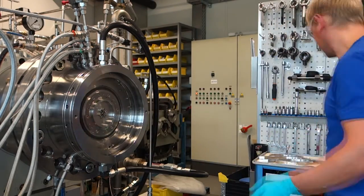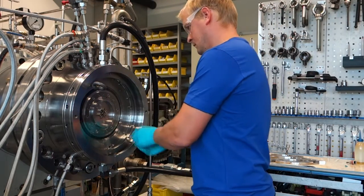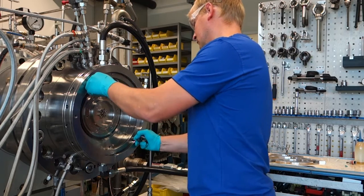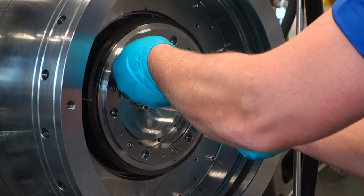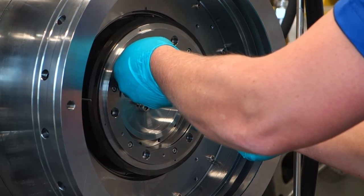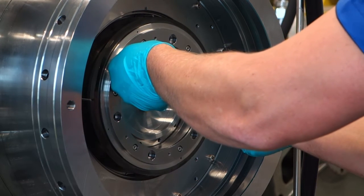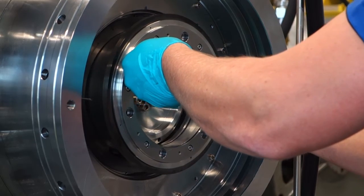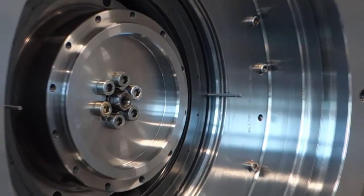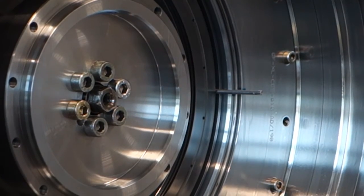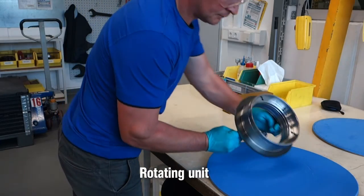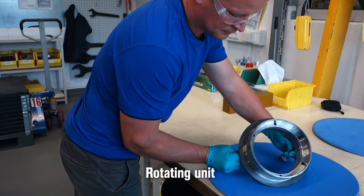The COBA seal is then removed, dismantled, and inspected in order to assess the condition of the seal after the test. The rotating unit is dismantled with care. The seal face of the rotating unit shows no contamination whatsoever. No oil has penetrated between the faces during standstill.